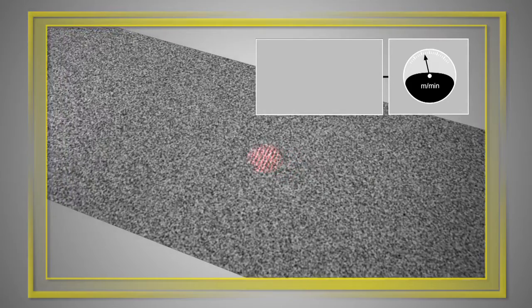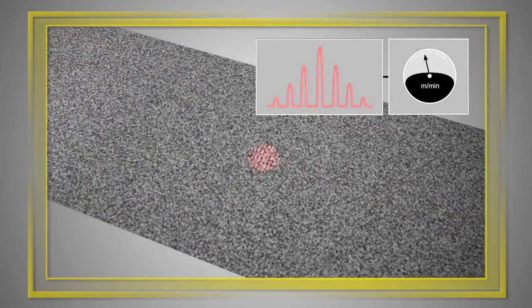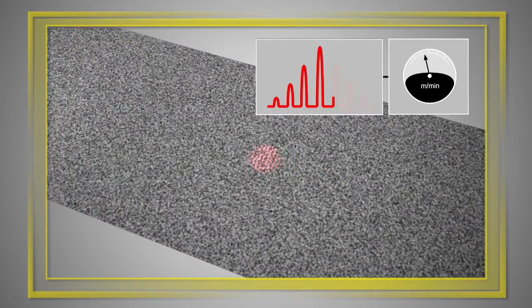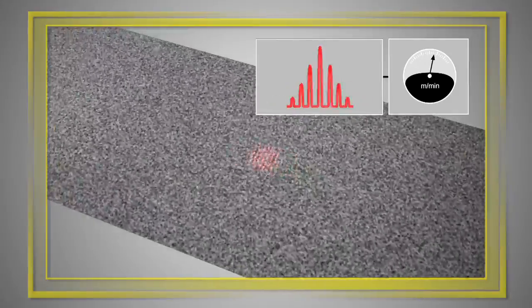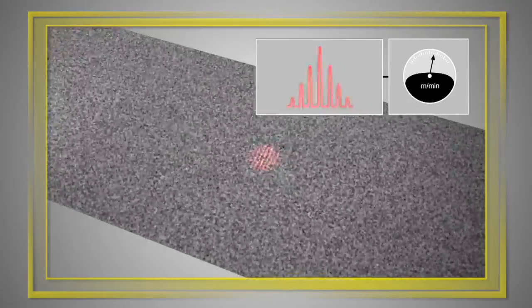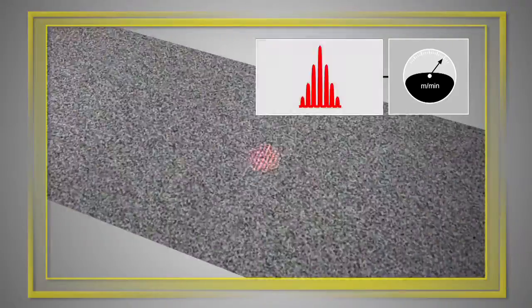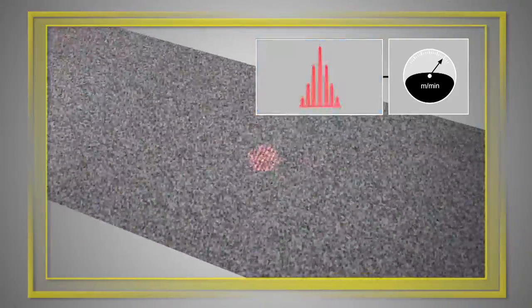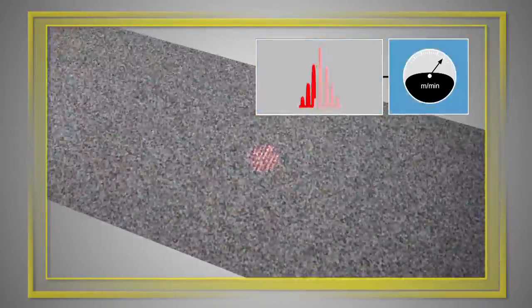As the surface moves through the fringe pattern, the intensity of the light scattered from the surface modulates in frequency. This modulation frequency, measured by the sensor's photoreceiver, is directly proportional to the surface velocity.